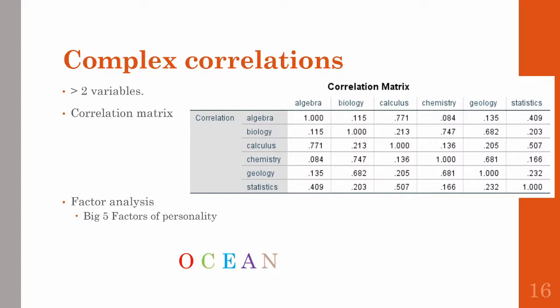For instance, the Big Five personality factors have been derived using factor analyses. Through larger scales of specific traits, certain questions would all highly correlate within one of the five factors: openness, conscientiousness, extroversion, agreeableness, or neuroticism.